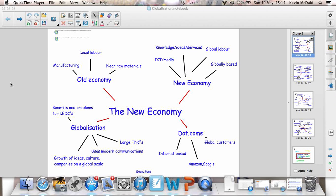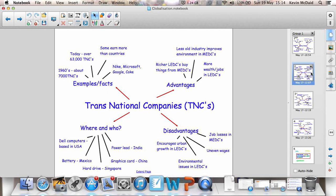But it has a number of benefits and problems, particularly for LEDCs. So transnational corporations. In the 1960s, there were about 7,000. Today, there's well over 60,000 transnational corporations. Some of these earn more money than some countries. And we've got some examples of some of the more well-known ones there.